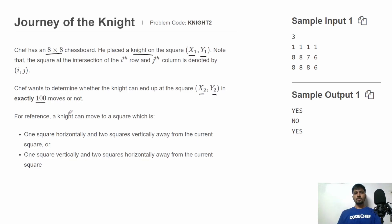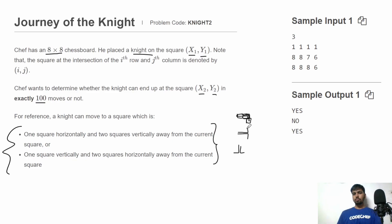For reference, the knight always makes an L-shape move: two blocks horizontal then one block vertical, or two steps vertical then one step horizontal. This is how the knight moves. We need to determine if this knight can go from (x1, y1) to (x2, y2) in exactly 100 moves.